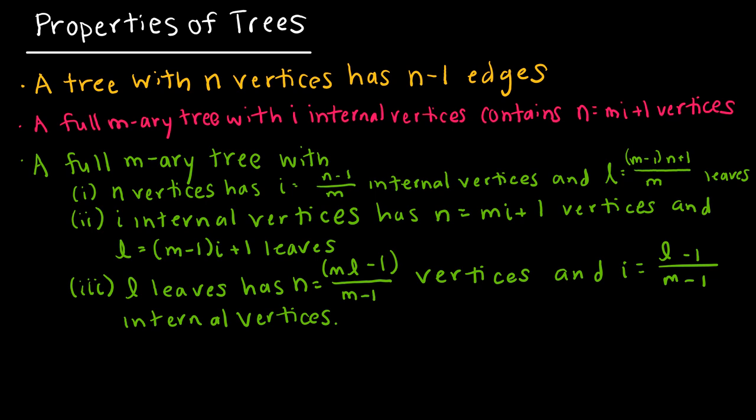The first property is that a tree with n vertices has n minus one edges. That one's pretty straightforward, and I have a feeling you can understand where it came from on your own.